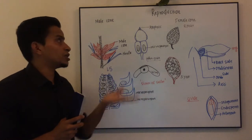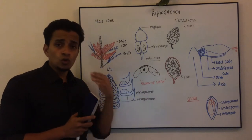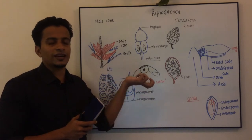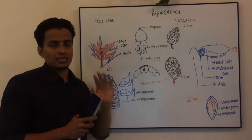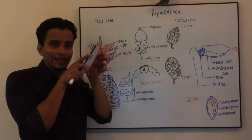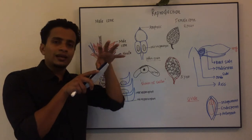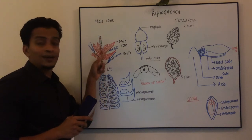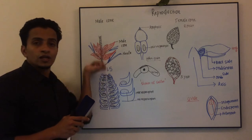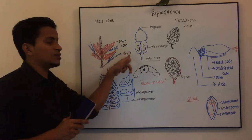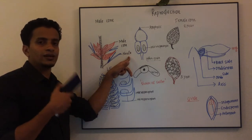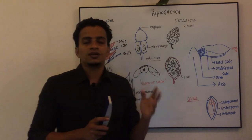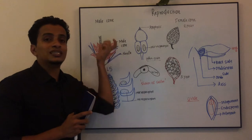Now let us move to the male reproductive structure, or male cone. A male cone is the male reproductive structure, which is made up of microsporophylls. When microsporophylls get aggregated in a compact way, it is known as a male cone. You can see the structure of the male cone, which is produced on the shoot. The dwarf shoot ends in needles, which are the photosynthetic units of the plant.